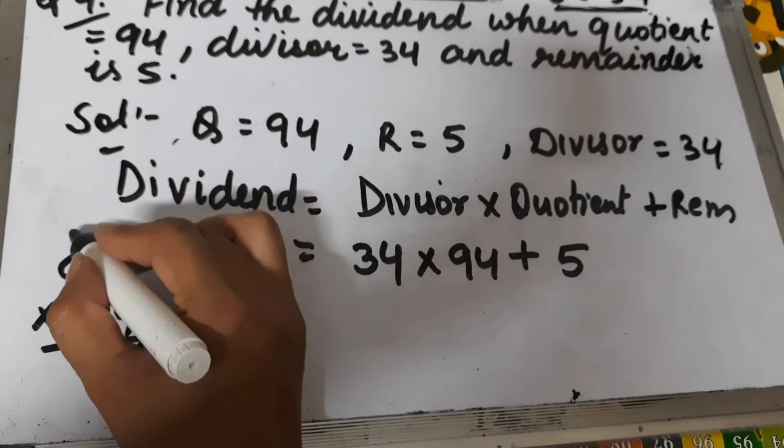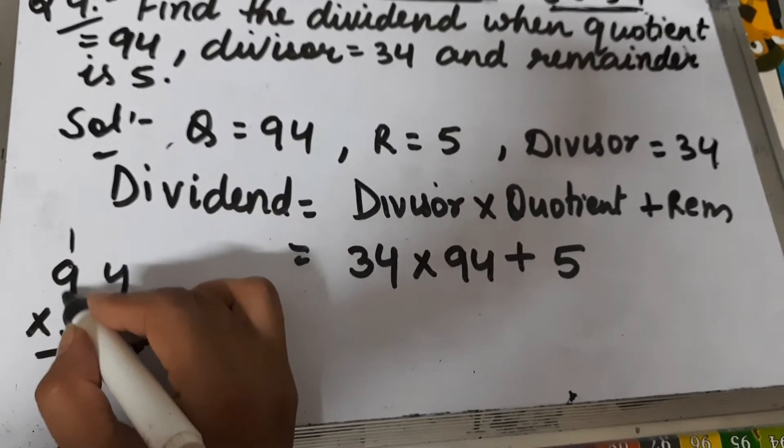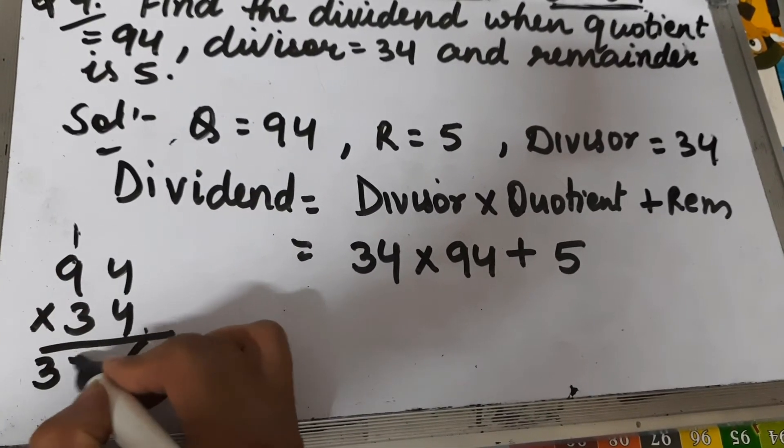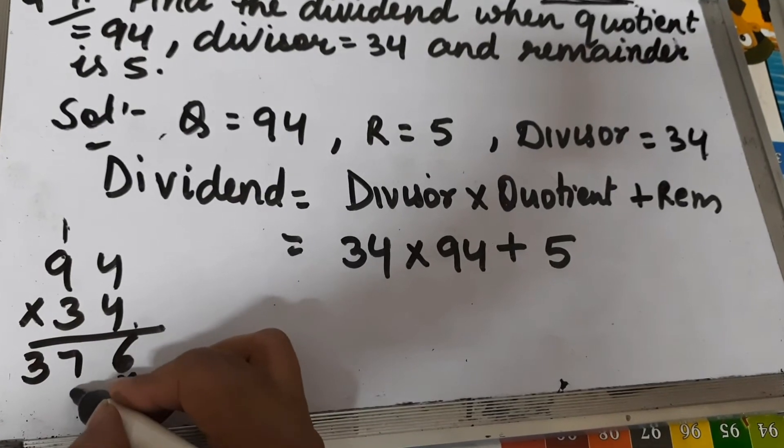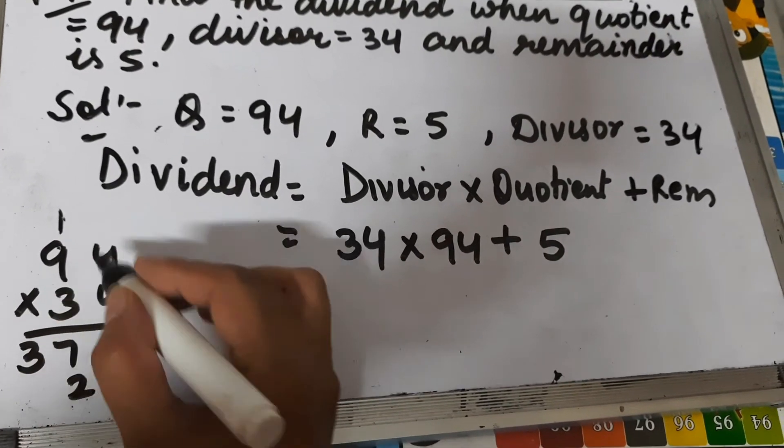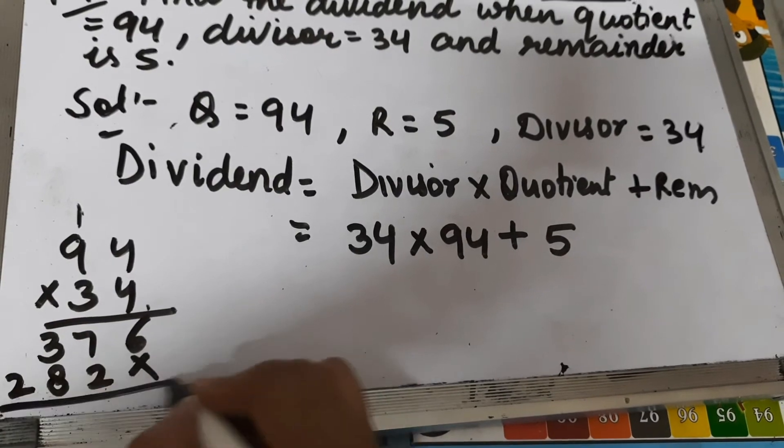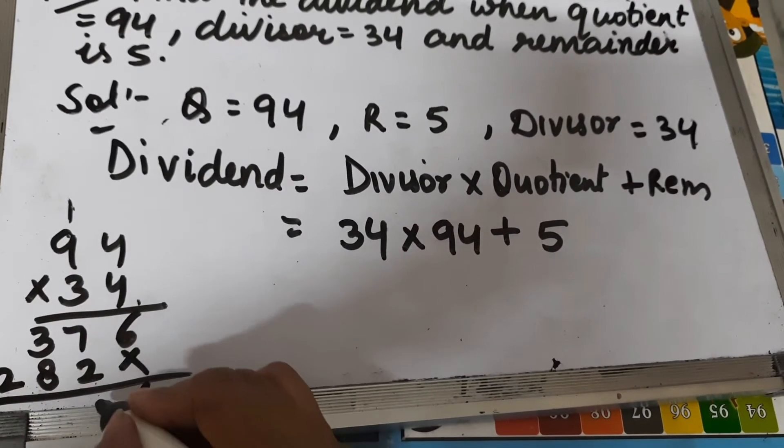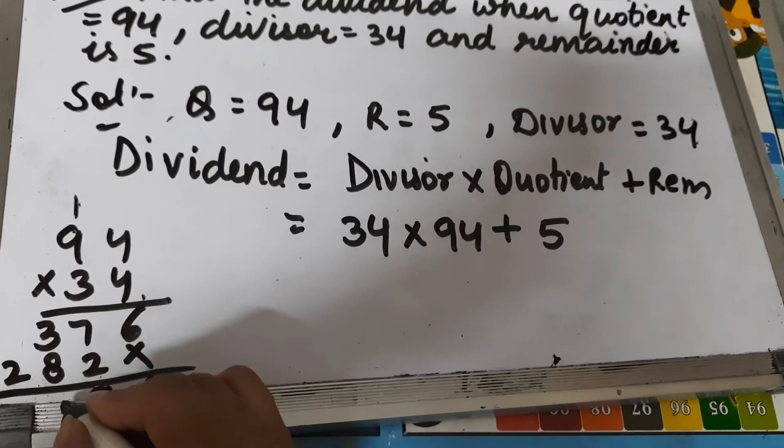4 times 4 is 16, 9 times 4 is 36, 36 plus 1 is 37. Now 3 times 4 is 12, 3 times 9 is 27, plus 1 is 28. After adding, we get: 6, 7 plus 2 is 9, 8 plus 3 is 11.